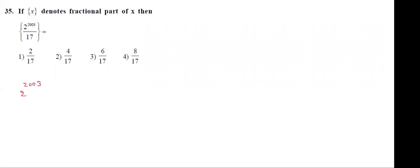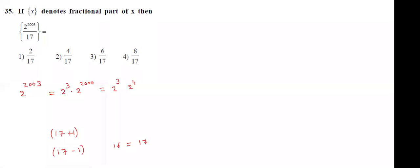Now convert this in the form of either (17+1) whole power expansion or (17-1) whole power expansion. So in terms of 17 we want to convert. This is 2 power 2000 — I'm writing 2 cube into 2 power 2000. Now 2 power 4 equals 16, and 16 we can write as 17 minus 1.